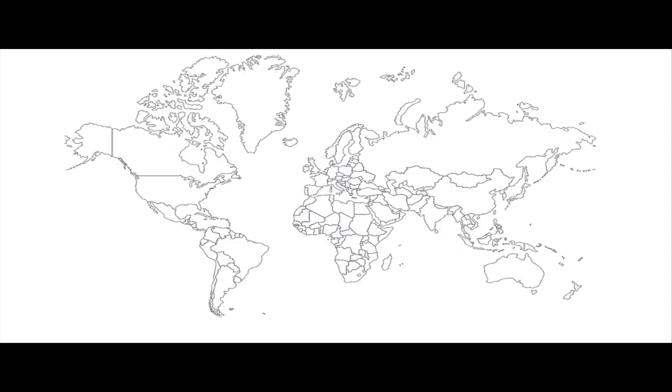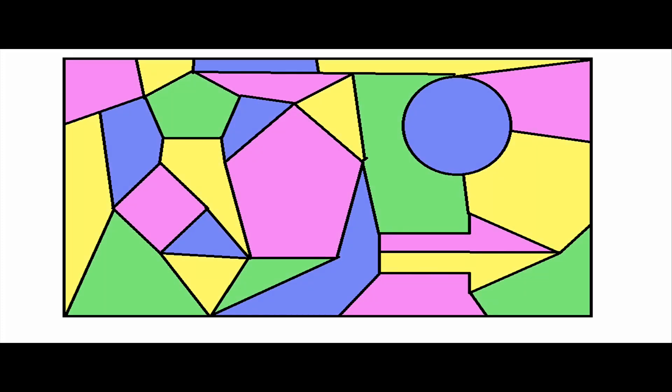And not just with maps of countries. Any two-dimensional arrangement of shapes can be completely filled in with only four colors so that no two-touching shapes share the same color.